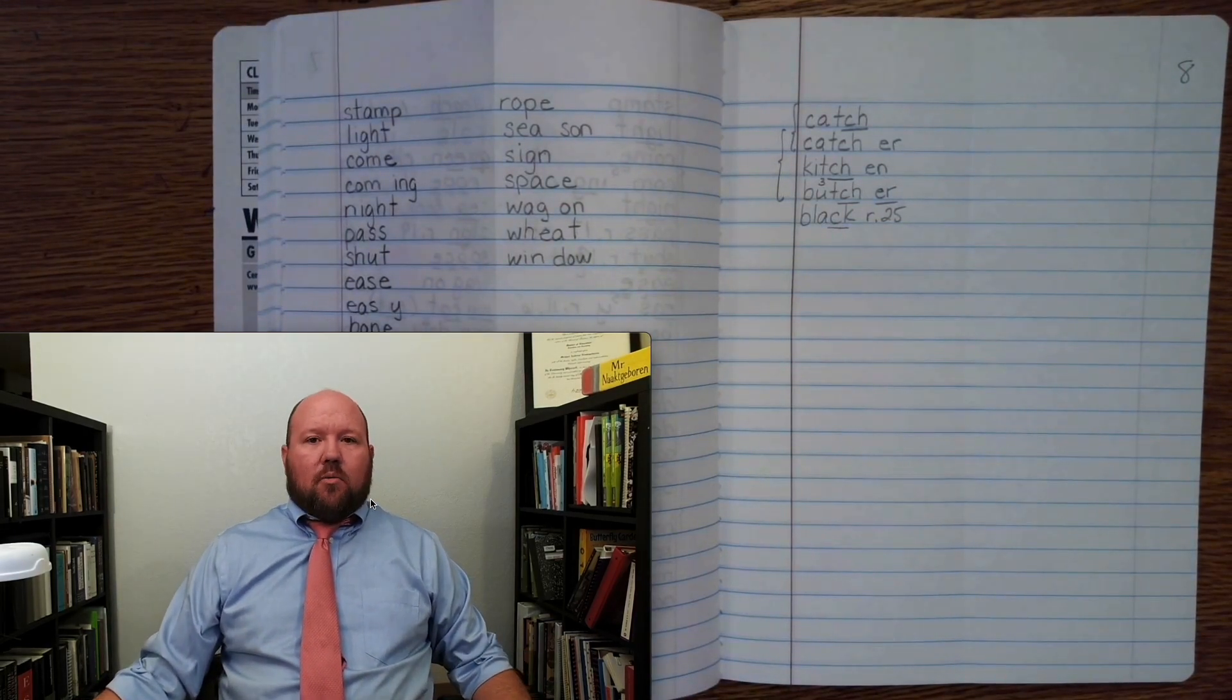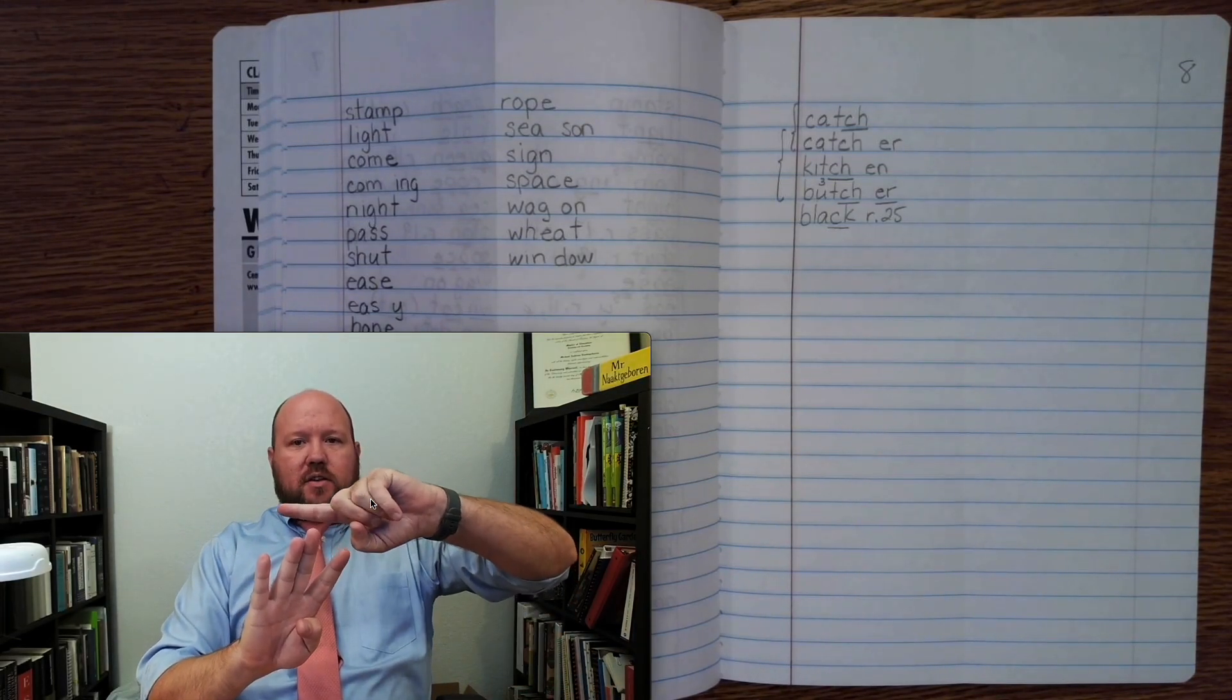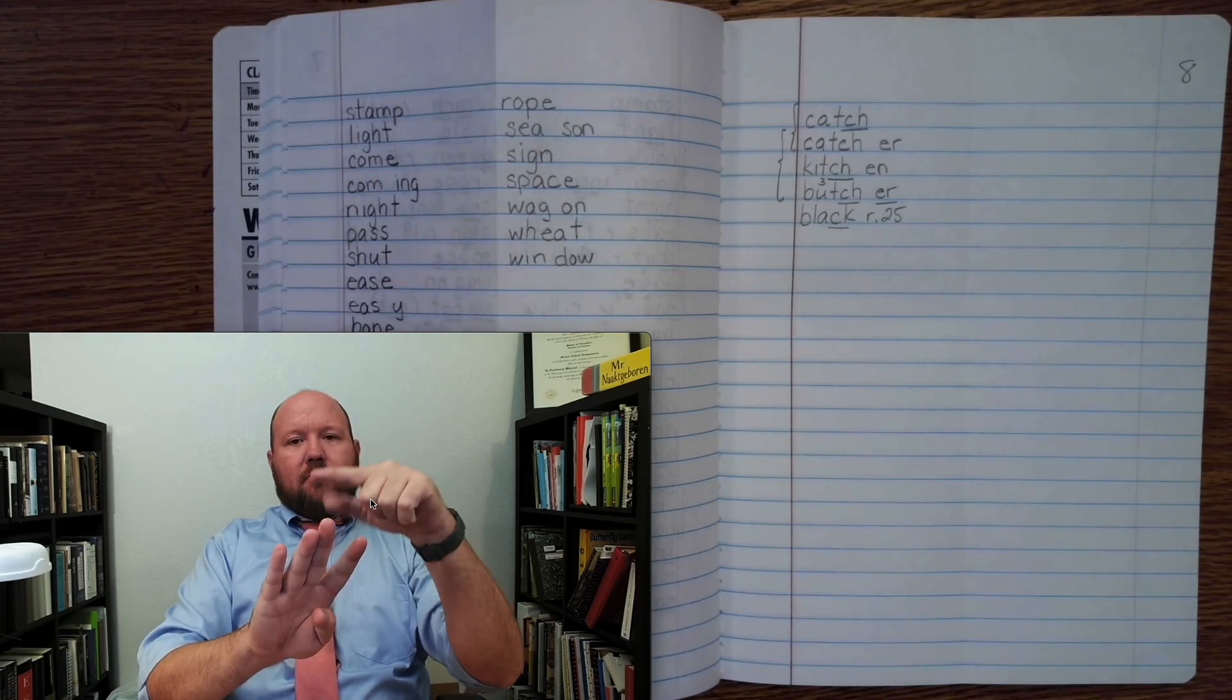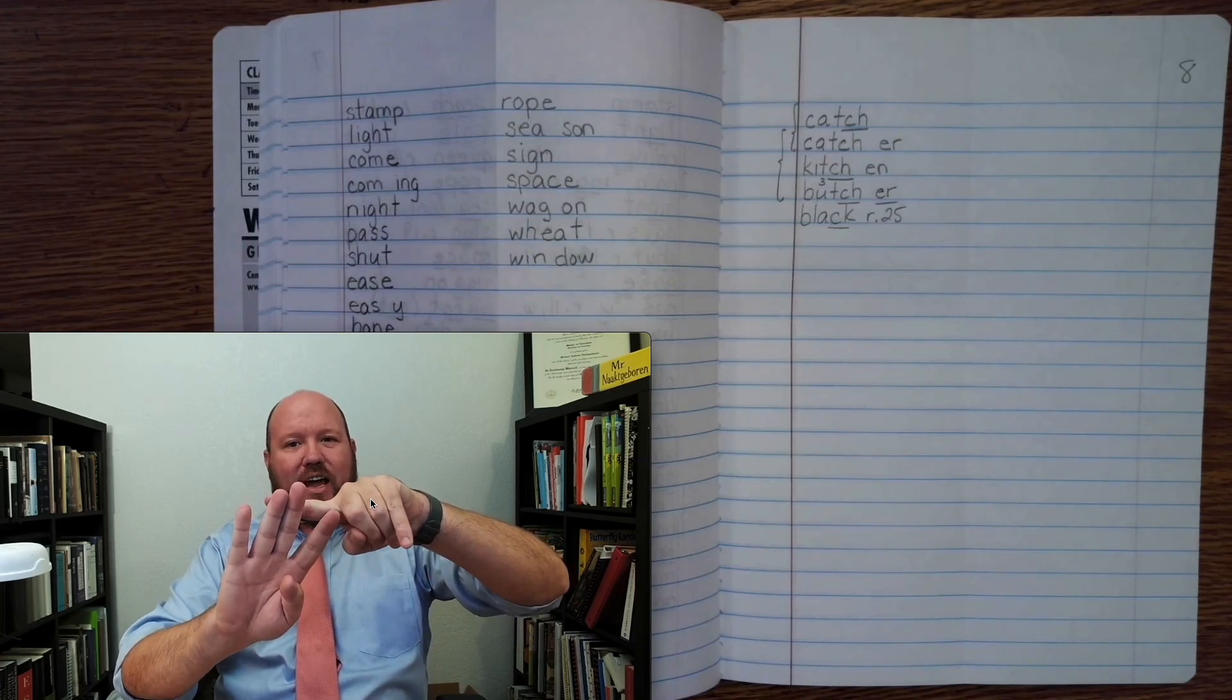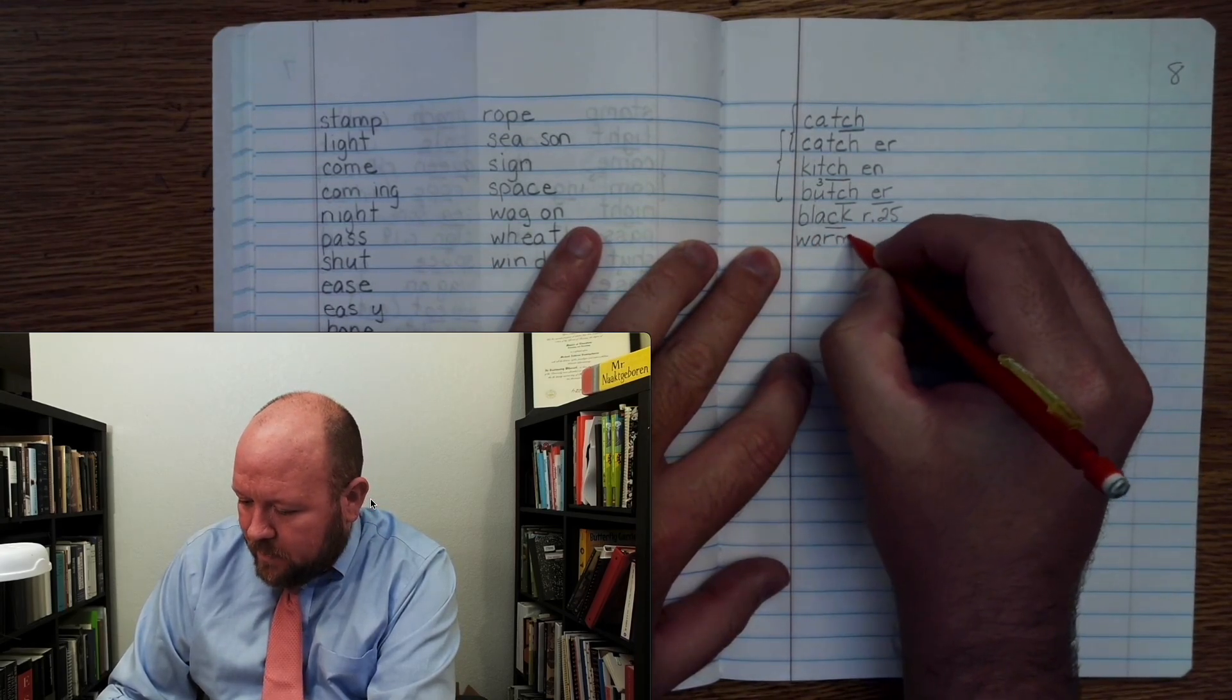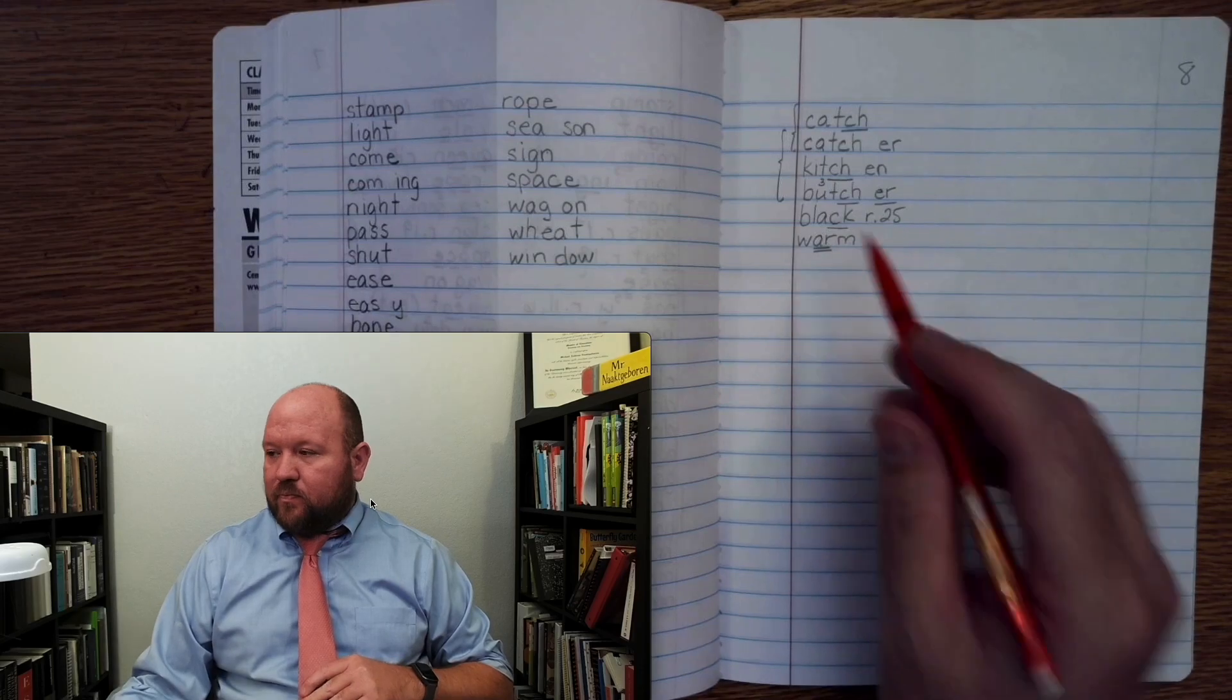Now the next word is warm, like it's warm outside. W-O-R-M, warm. But here we're not going to use an O-R because that would be the word worm. Right? So it is the OR sound, but we're going to use an A-R to spell it. So you just have to remember this. It uses an A-R even though it says OR. Right? Warm. W-A-R-M. W-A-R twice, M-W-R. It's a phonogram, it's not supposed to make that sound.